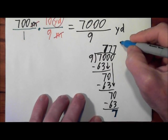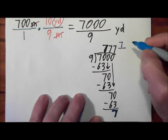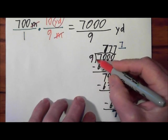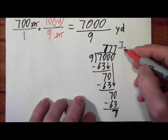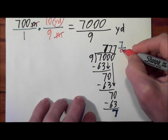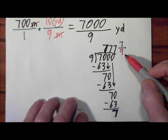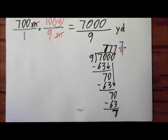You write that as your numerator, and you keep this 9 right here that you were dividing by. Remember, this was your denominator? Well, it's still the denominator. So 777 and 7 ninths is the correct answer.